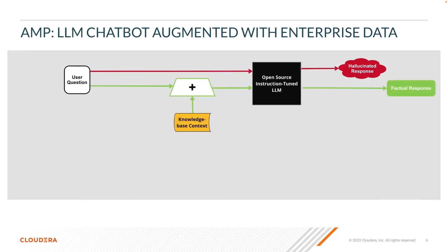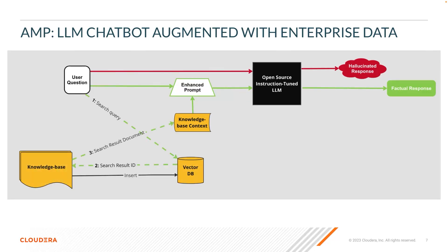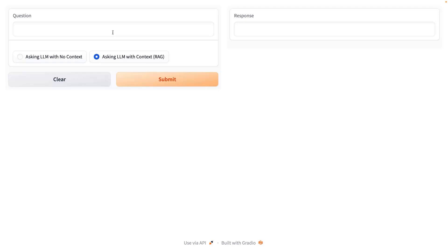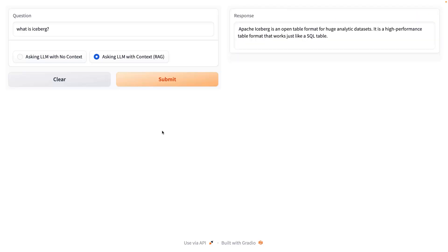One strategy to minimize hallucinated responses is to give the LLM context from your enterprise data, effectively creating a subject matter expert chatbot. In this AMP, we've used a selection of CML's documentation and populated a vector database with it. Now when a user submits a question, the vector database will be queried to see if there is any text similar to the question being asked. If there is, that text will be added to the question to create a response that is more likely to be factually correct. Let's ask the app the same question again, but this time with the benefit of including context from the vector database. As you can see, the answer is now contextually correct in terms of Cloudera and our documentation and terminology — iceberg is, in fact, a table format.